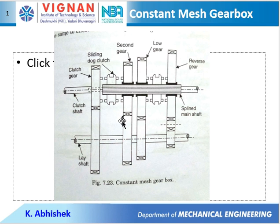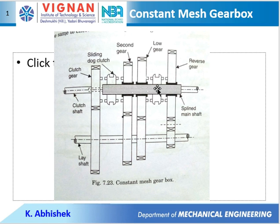We can see a structure called a dog clutch. This dog clutch is responsible for engagement of gear in this case. Since these gears — second gear, low gear, reverse gear — are rotating about their center without making the shaft rotate, they must be engaged with the help of these dogs, which are indirectly controlled by the gear shift lever. When the first sliding dog clutch on the left engages on the right, you will obtain second gear, because the second gear drive will be given to this shaft.